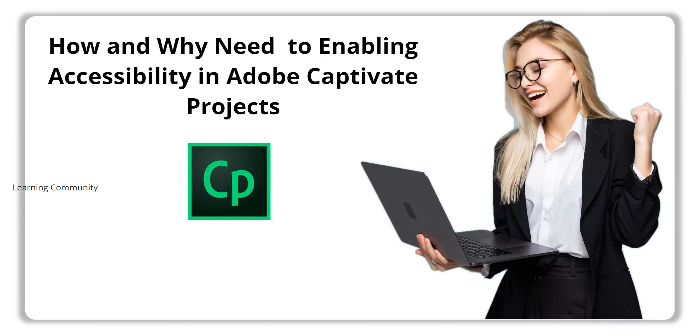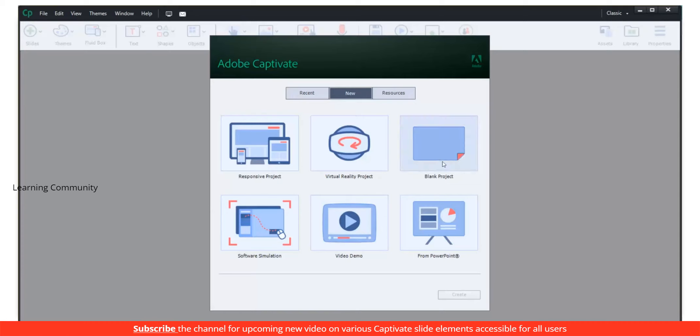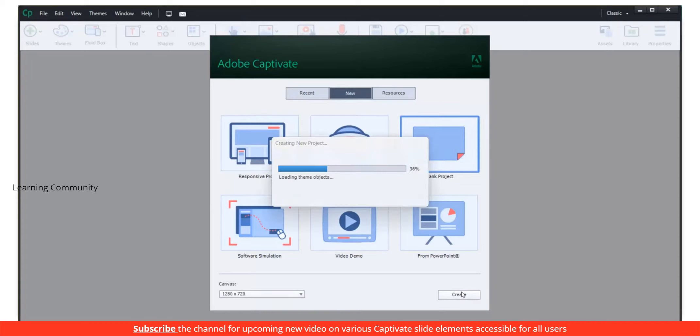How and why do you need to enable accessibility in Adobe Captivate projects? Output generated with the Enable Accessibility option is displayed by all supported browsers.